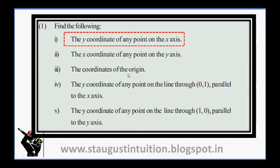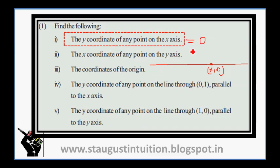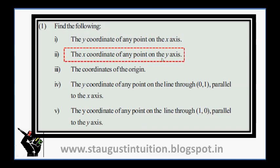The y-coordinate of any point on the x-axis is a very simple answer. The y-coordinate of any point on the x-axis is equal to 0. Similarly, the x-coordinate of any point on the y-axis is also 0.